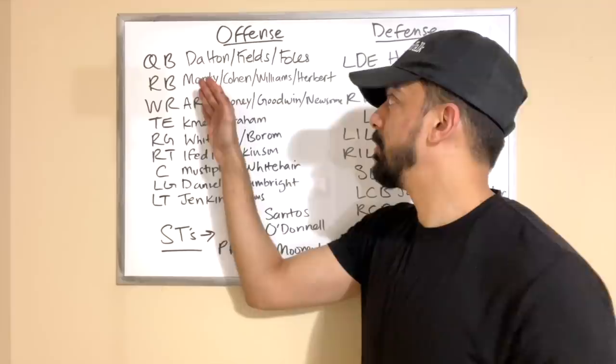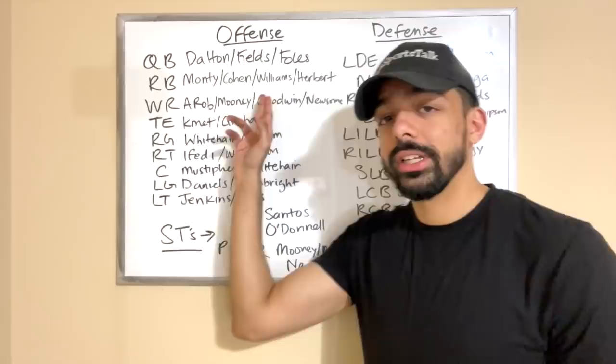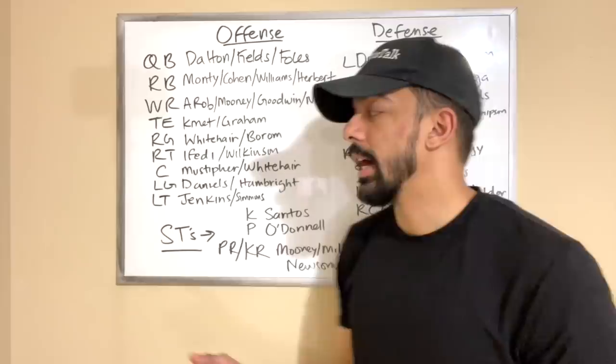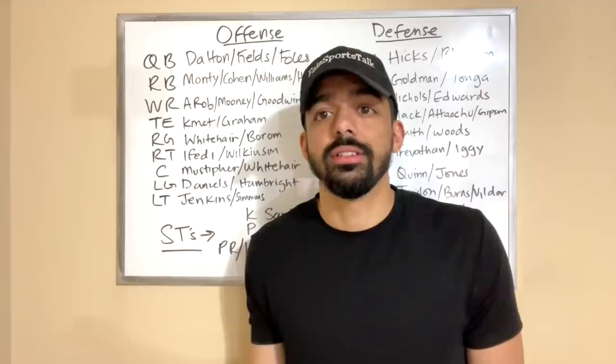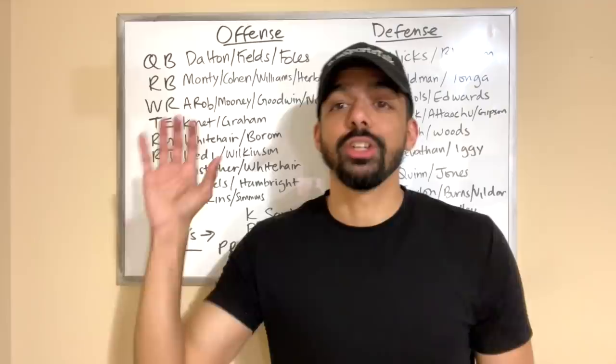Moving on to running back: David Montgomery, our bell cow running back. Behind him Tarik Cohen, then Damian Williams, and then Khalil Herbert, the running back we just drafted. It's a pretty stacked running back room - we've got plenty of depth here, which we did not have last season. Last season it was Monty or bust. Now we actually have guys that play the position as backups to Monty.